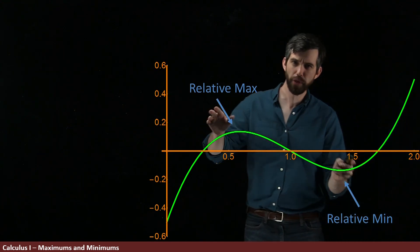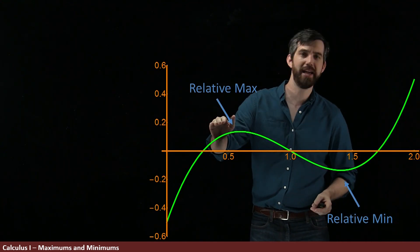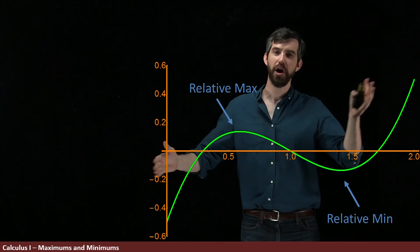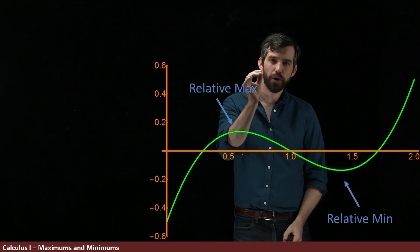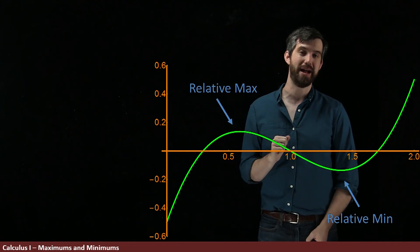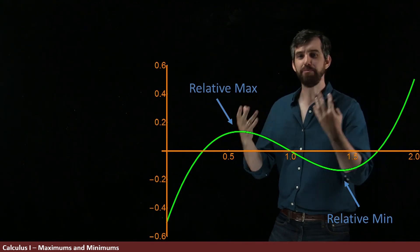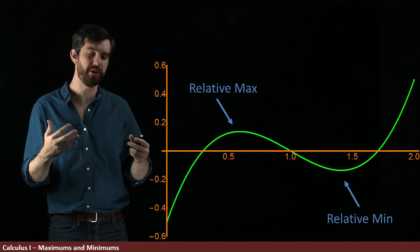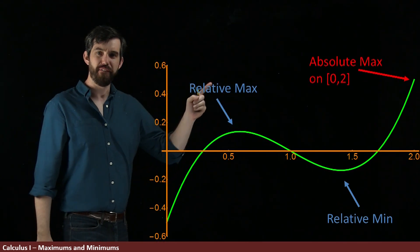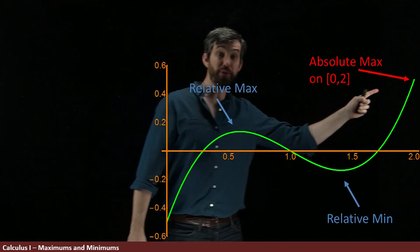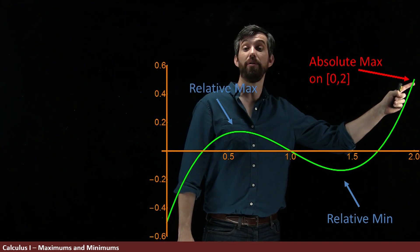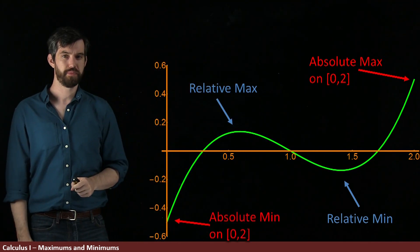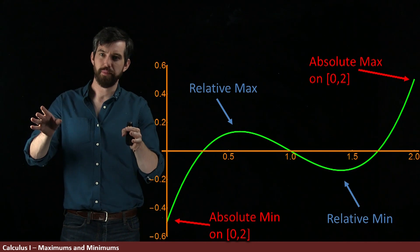Well, you'll notice about both of these points is that this is not the highest point on this entire interval 0 to 2, and this is not the lowest point on this entire interval. There are only relative maximum or local maximum. But we want to talk about what is the absolute maximum and what is the actual largest and smallest value. Well, the very largest on 0 to 2 is this point that occurs right here. That's higher than every other point. And the very smallest is going to occur right down here.